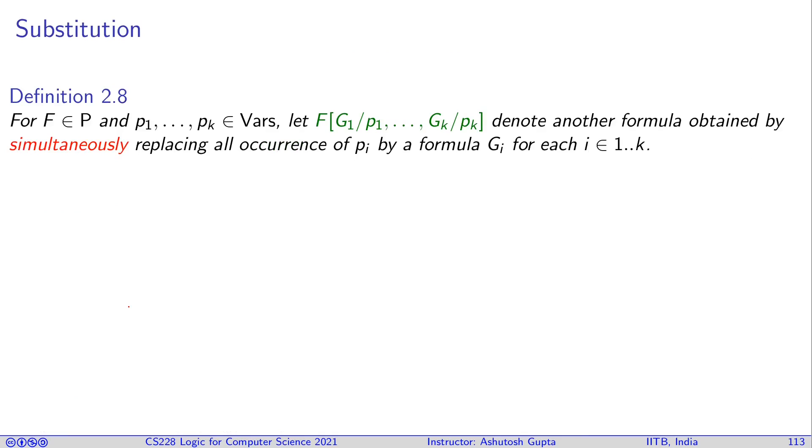We need a few more notation with something called substitution. Substitution is basically a simple idea that if you have a variable occurring somewhere and you can replace with another formula, then it gives you some notation. This is the notation. You can write a formula F which has variables p1 and pk, and wherever p1 occurs you can replace it by g1, and wherever pk occurs you replace by gk. This is called simultaneous substitution.